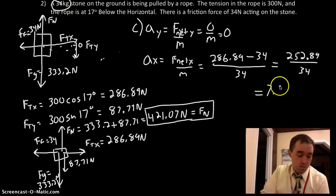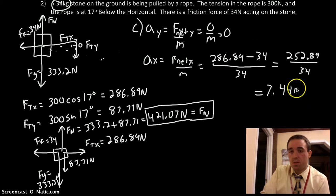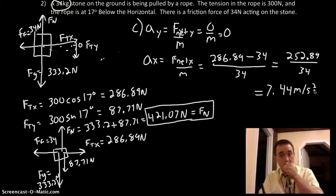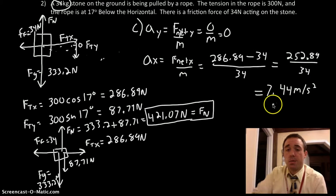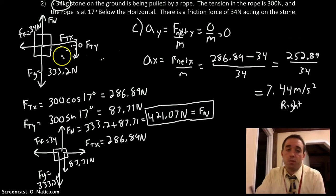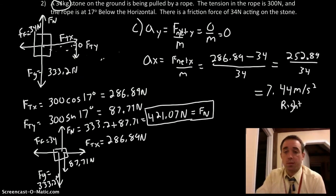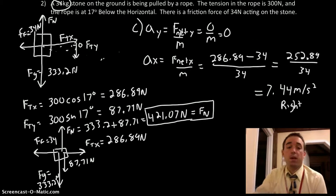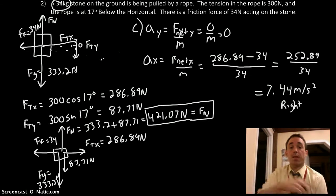And our Fty is 300 times sine 17 degrees. 300 times cosine 17 is 286.89, 286.89 newtons. And our Fty is 300 times sine 17, 87.71 newtons. All right, so we broke that apart.